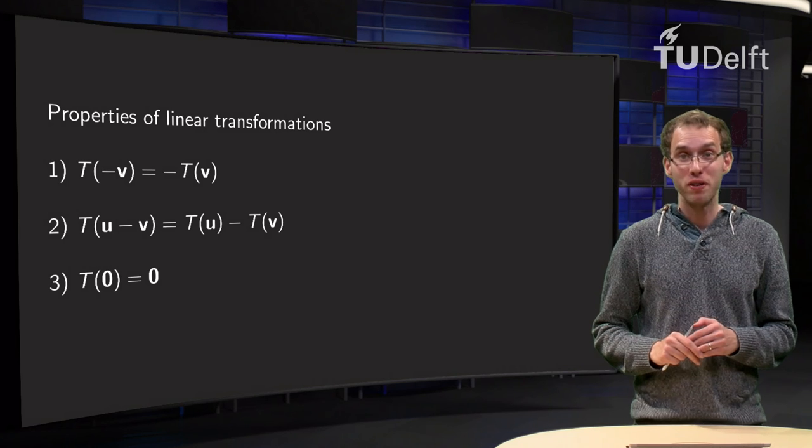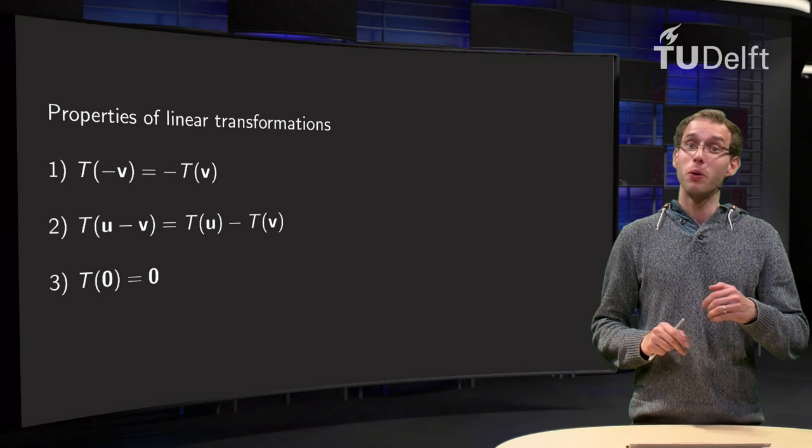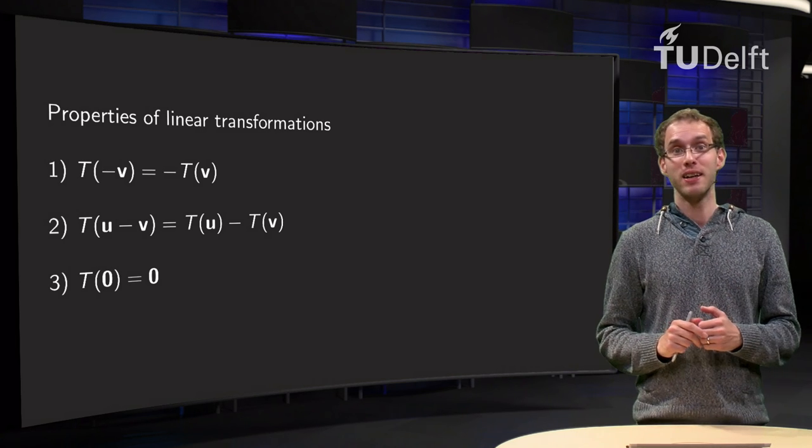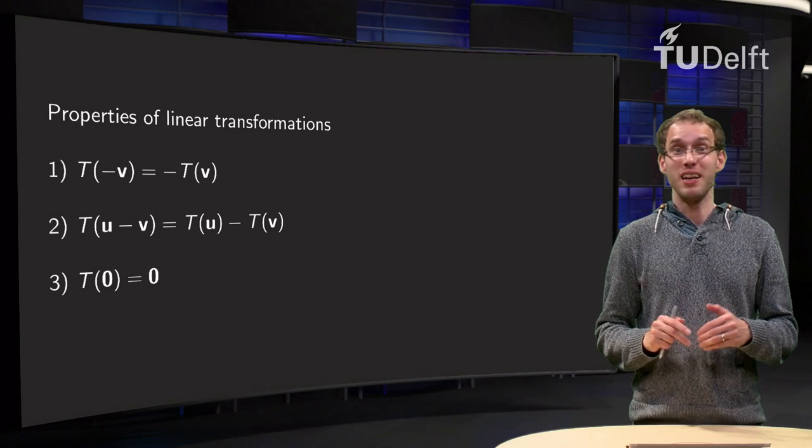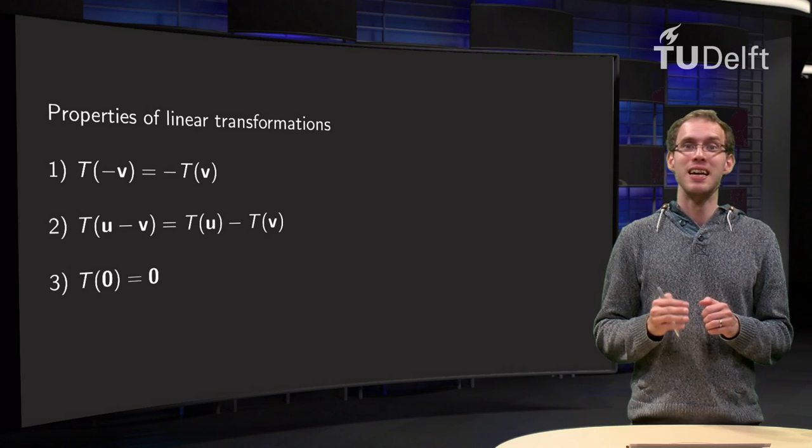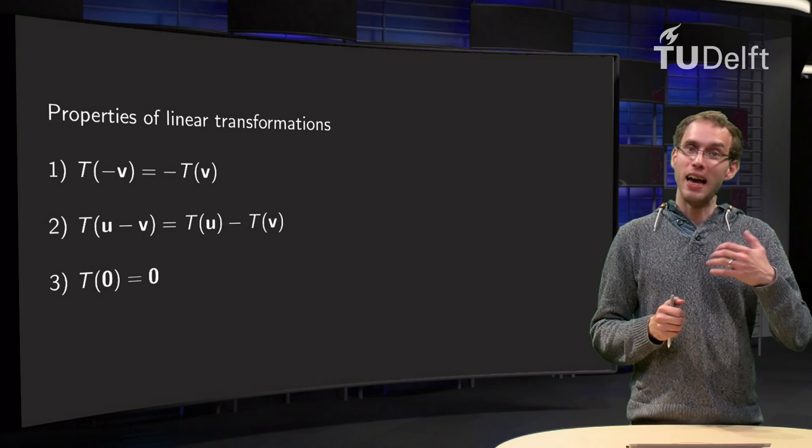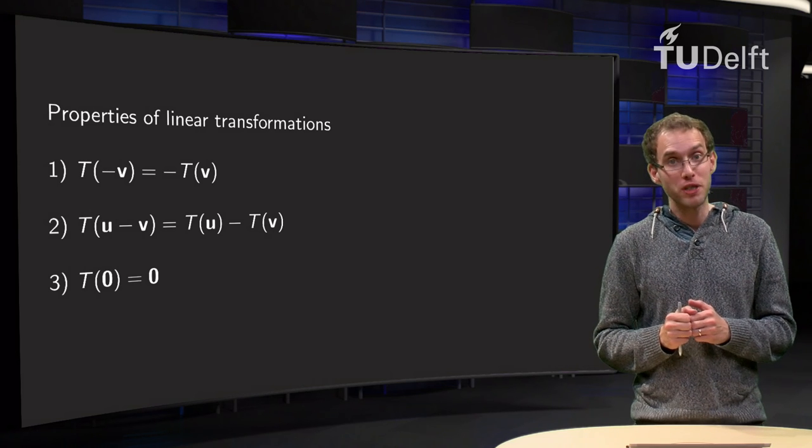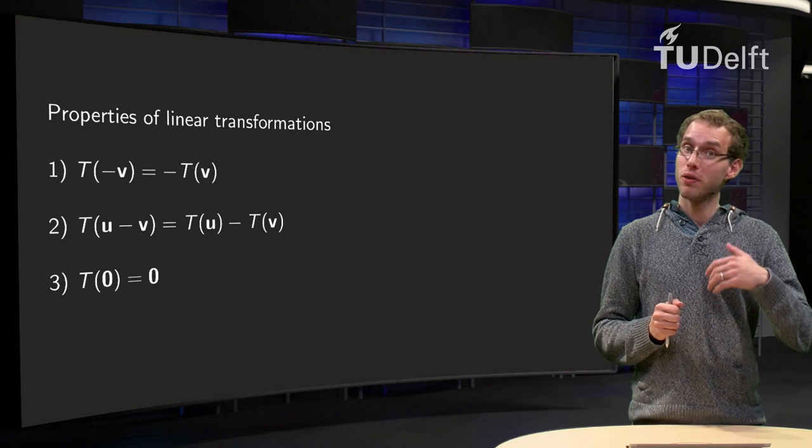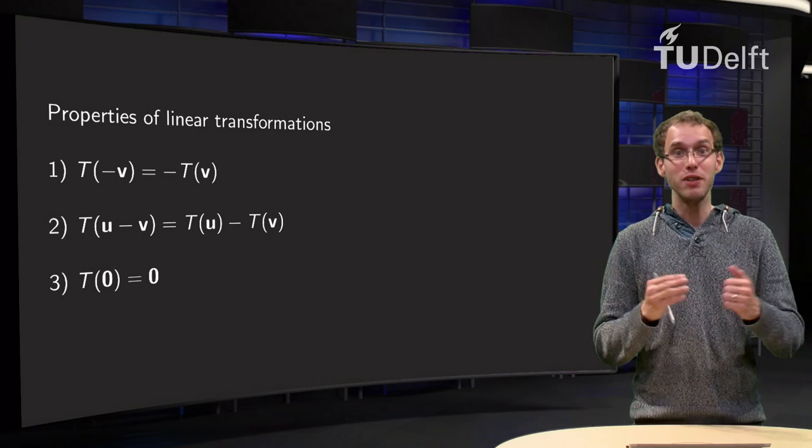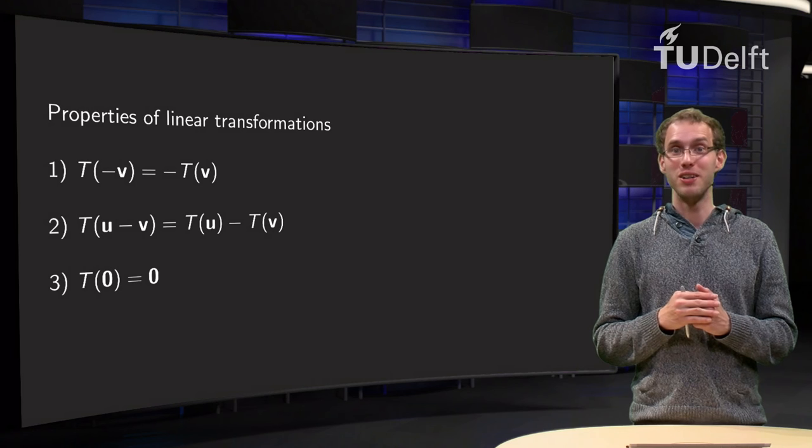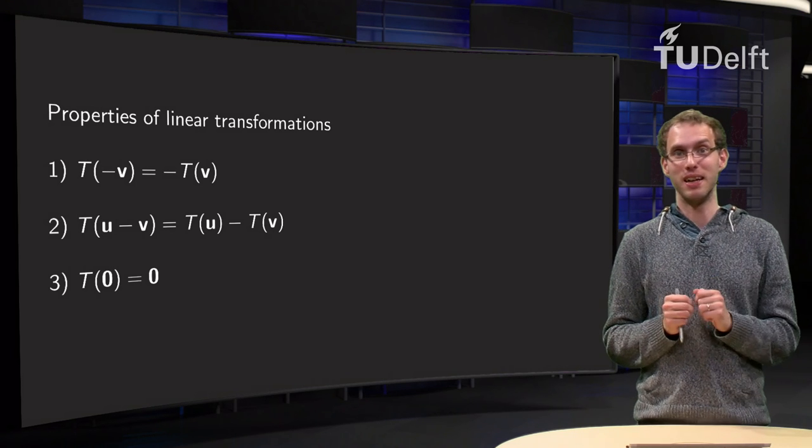Some transformations look very linear, but when you try to prove they are linear, you run into trouble because they are not in fact. That is because linearity is actually quite a strong constraint. In this video you will see a few properties of linear transformations which will allow you to see straight away that some transformations are not linear, even though they may appear linear.